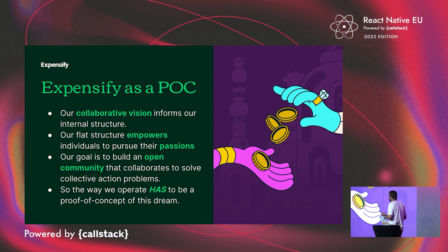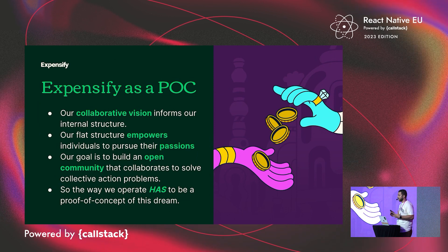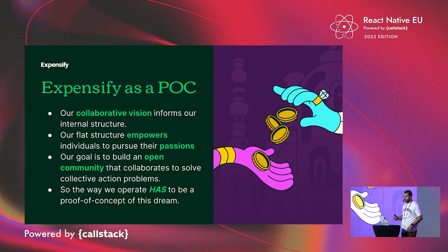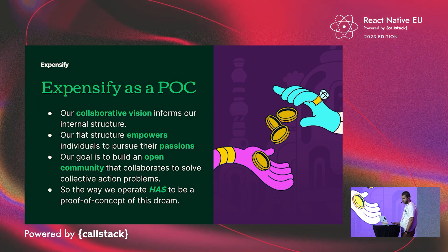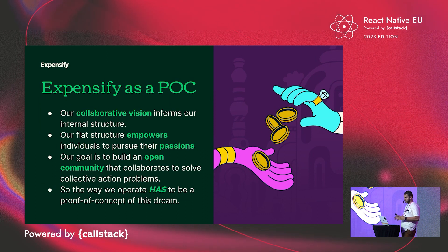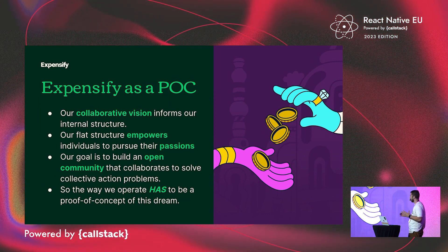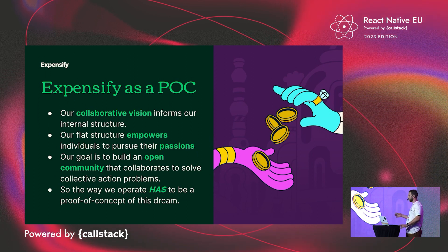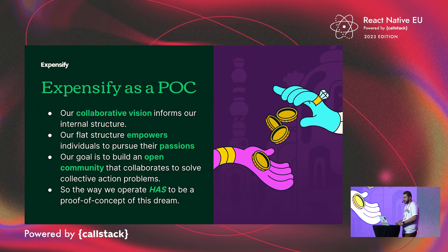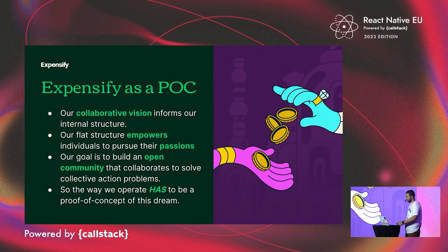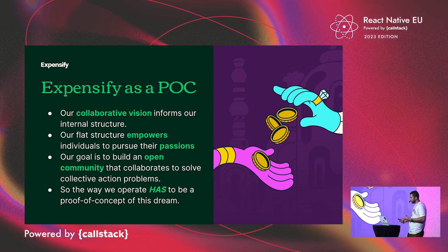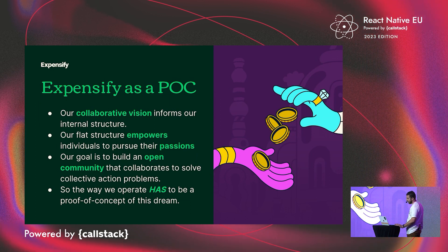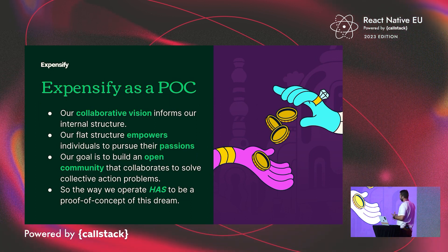I'd like to talk about Expensify as a proof of concept. Our collaborative vision for the future of the product actually informs our internal structure. Rather than being split up into smaller, distinct, discrete teams, we have one big team. Each individual has pretty much equal access to contribute their vision to the product and to use Expensify as a vessel to solve the real-world problems they're passionate about. This makes Expensify a great place to work — it helps us maintain a tight-knit culture, provides employees the freedom to pursue their passions both inside and outside of development, and encourages us to maintain a bold and inspiring long-term vision for where we want to take our product.